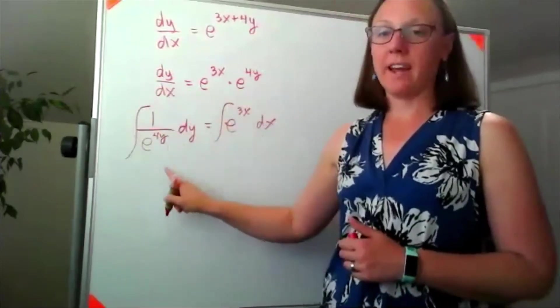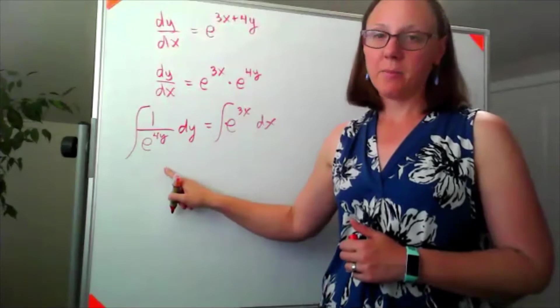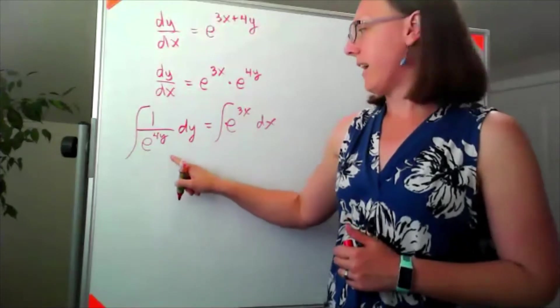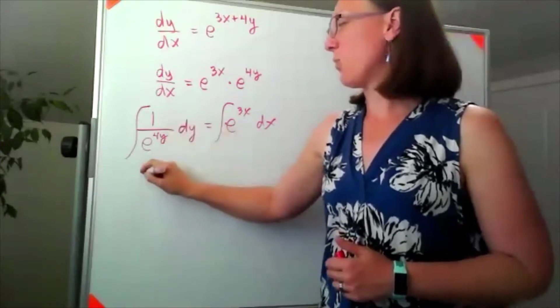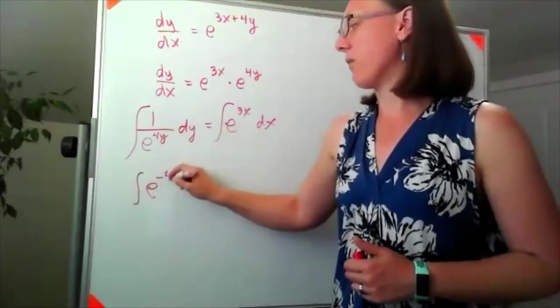Looking to integrate both sides on this one, it's going to be easier for us if I think about that e to the 4y in the denominator really as an e to the negative 4y.